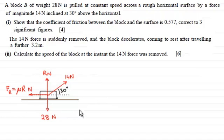Now this was the diagram we had before and we're now told that the 14 newton force is suddenly removed. So if we just remove that, the block now decelerates, coming to rest after travelling a further 3.2 metres. And we're asked to calculate the speed of the block at the instant the 14 newton force was removed. So if you'd like to have a go at this, just give you a moment to pause the video. Do come back when ready and you can check your work solution against mine.